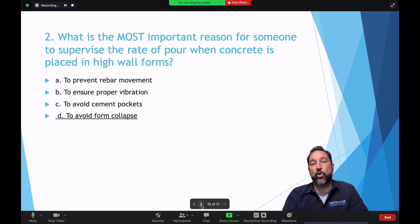How about this one? What is the most important reason for someone to supervise the rate of pour when concrete is placed in high wall forms? To prevent rebar movement? To ensure proper vibration? To avoid cement pockets? The best answer would be to avoid form collapse. That would be the best answer. Remember, you're going for the best answer.